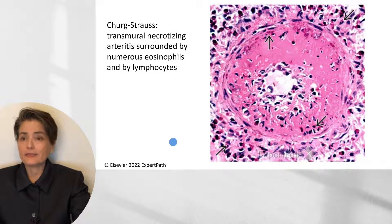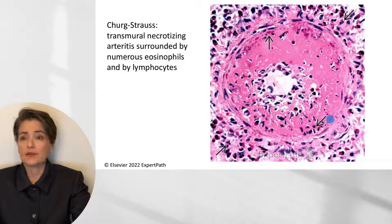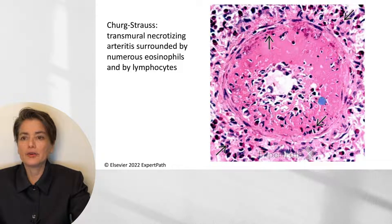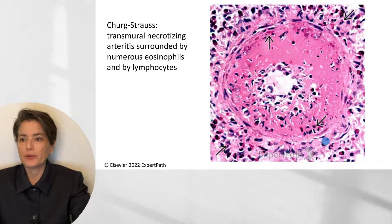Here is an example of Churg-Strauss syndrome. You can see the vessel wall is in distress with necrotizing arteritis and abundant inflammatory cells. The arrows point out eosinophils — some are degranulated eosinophils and some are healthy eosinophils coming in. There are abundant eosinophils visible here.